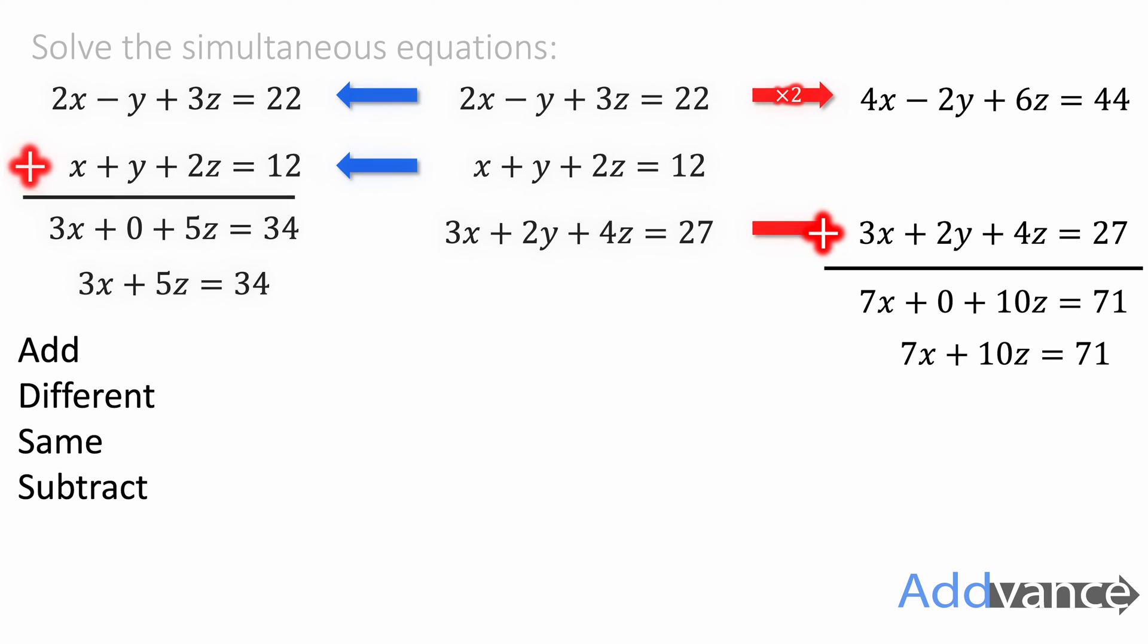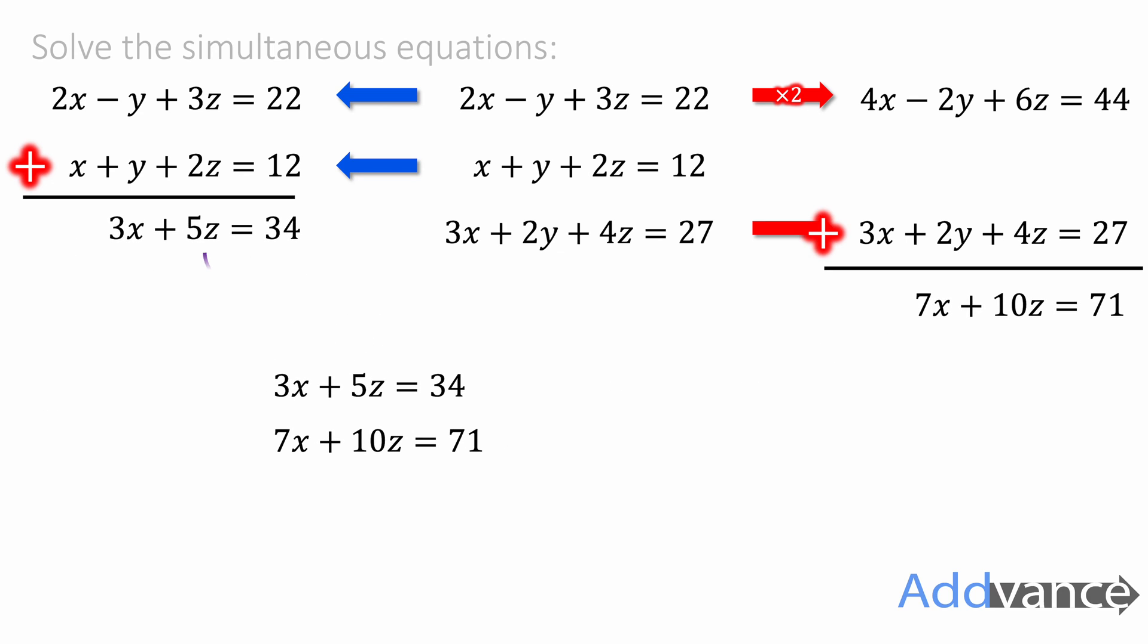7x plus 10z is 71 and 3x plus 5z is 34. We're going to bring these together. We're going to use these to eliminate the z's now. We're getting really close. We've eliminated the y's. Now we'll eliminate the z's.